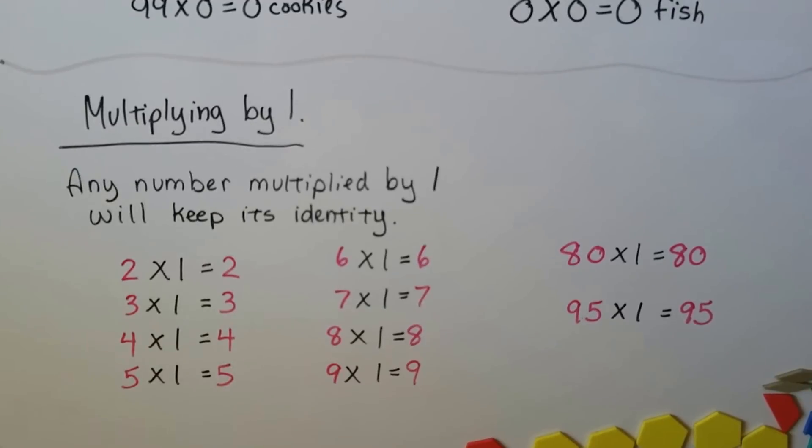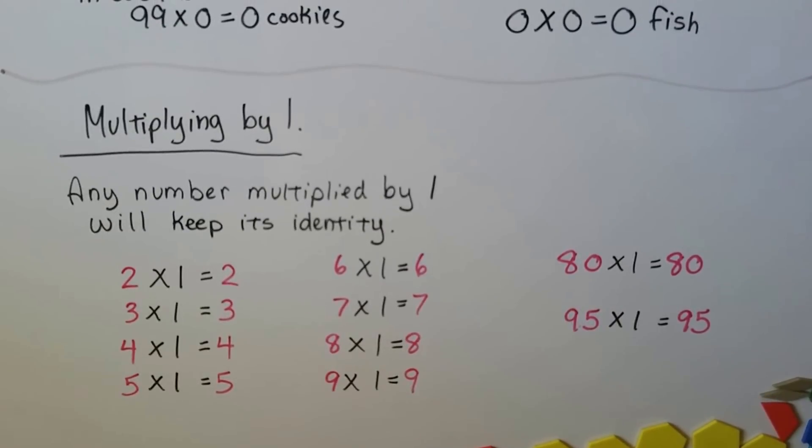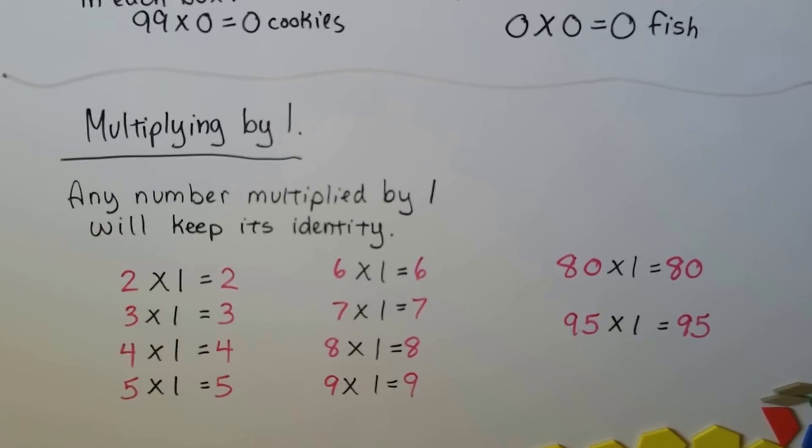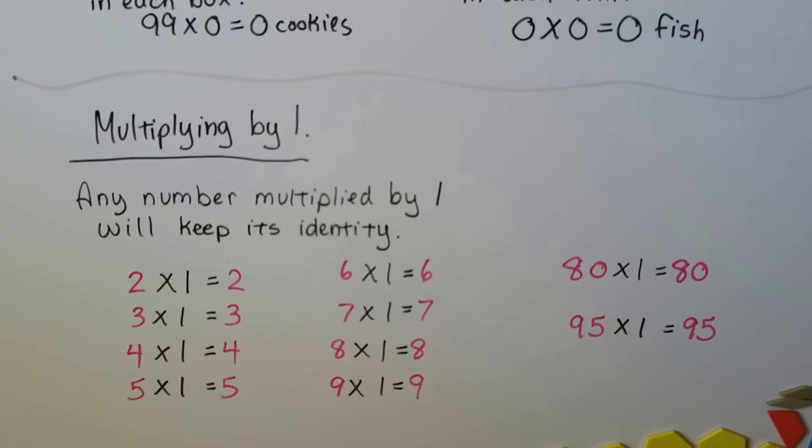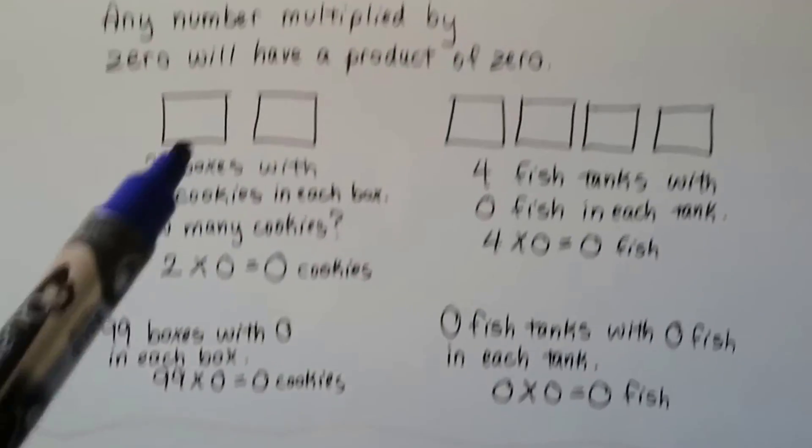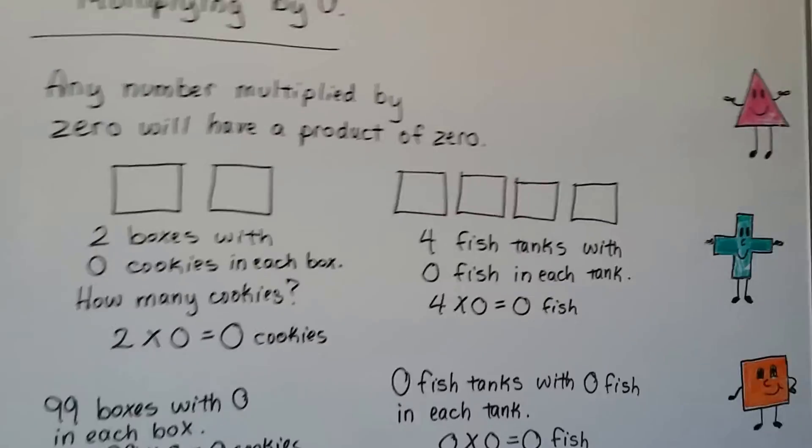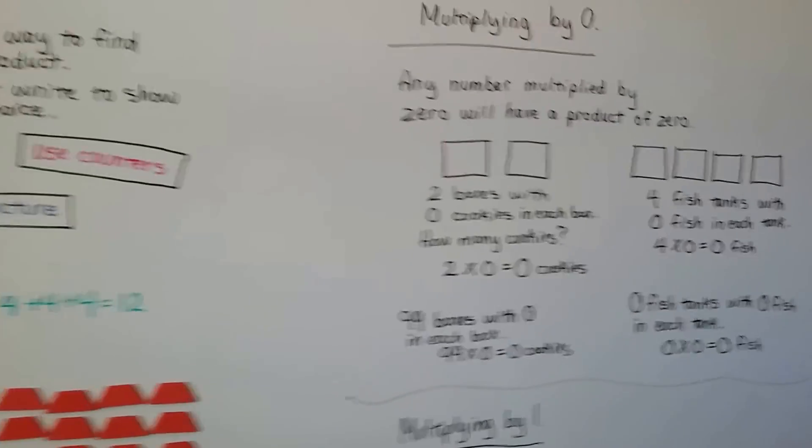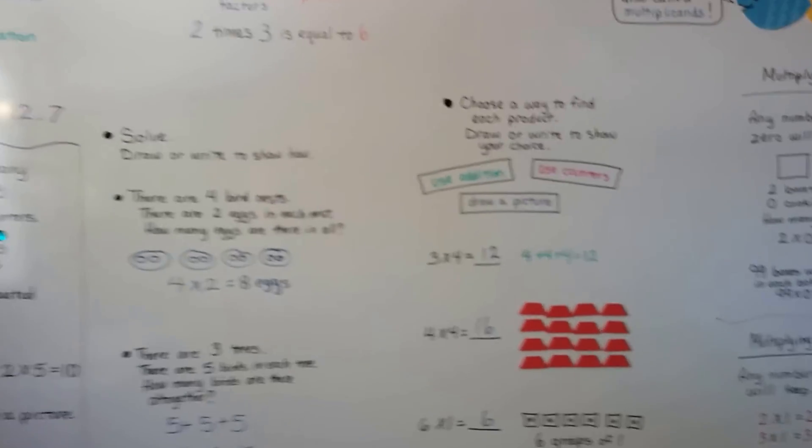We could do 9 million times 1, and it's going to stay 9 million. So anytime we multiply by 1, it is the same number that we're multiplying by. It keeps its identity. And anytime we're multiplying by 0, the answer is 0. So those are probably the easiest ones to multiply by, right? 0 and 1, that's really easy to remember.